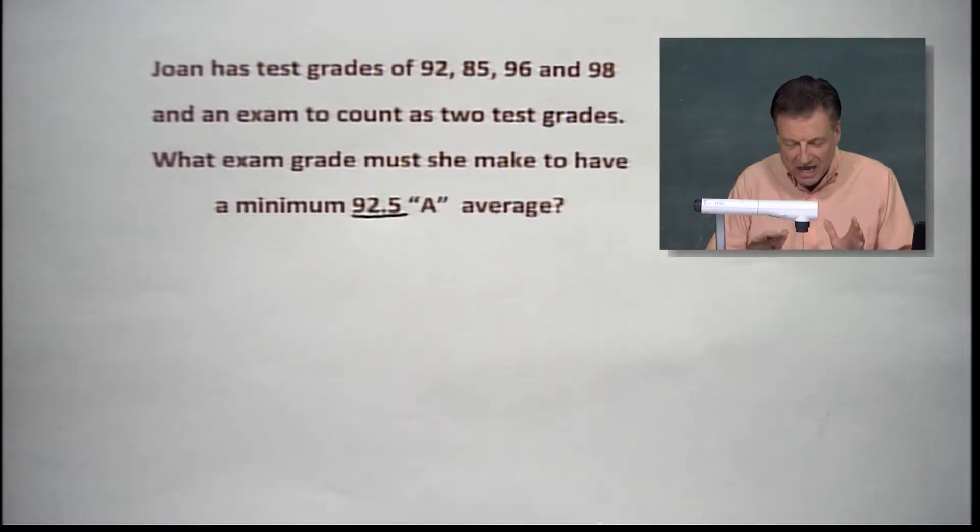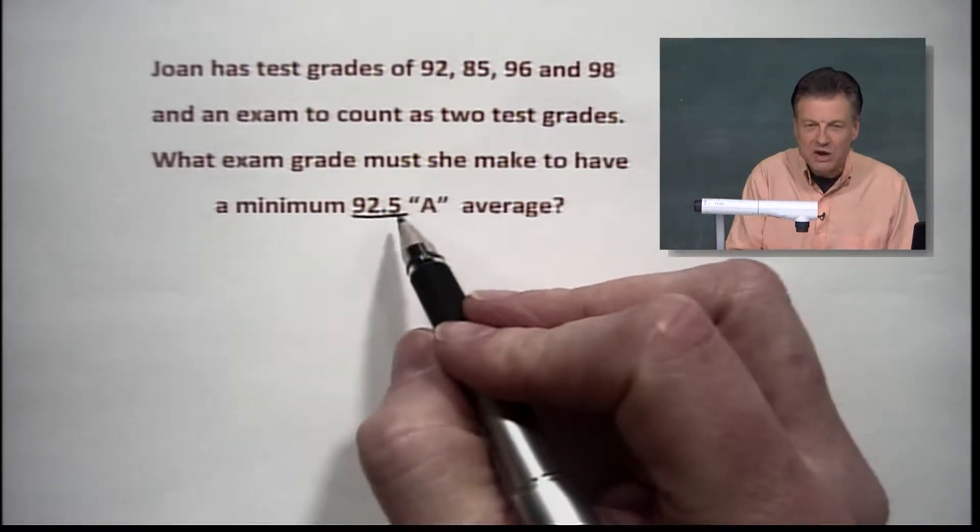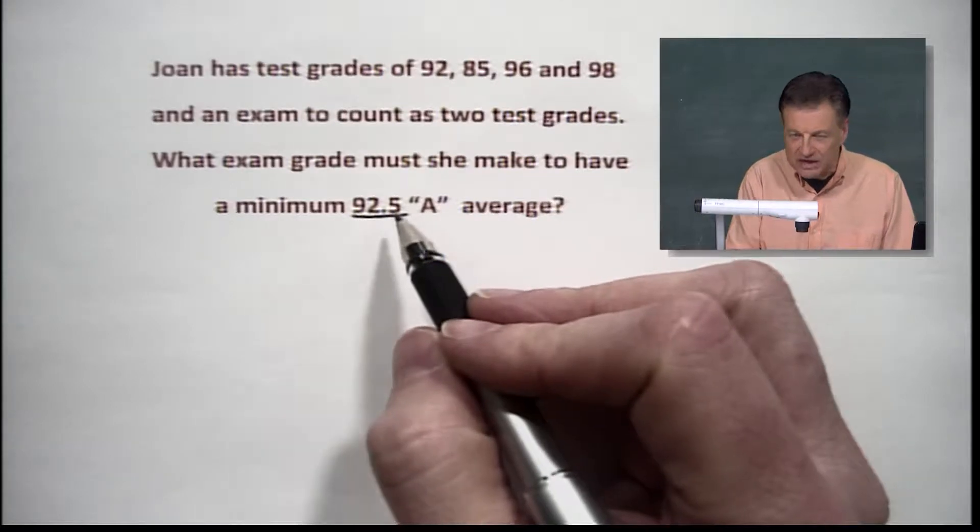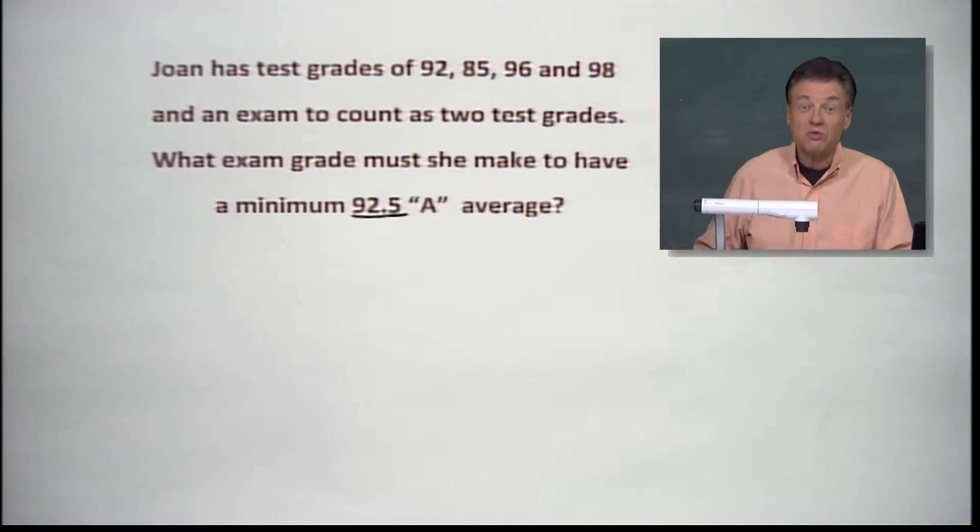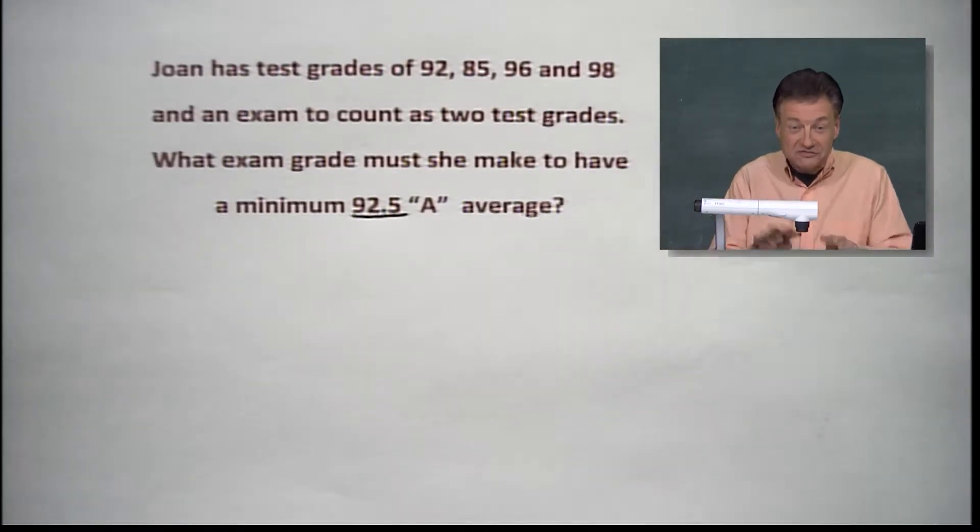So that's why that's minimum put in that way rather than say 93 or 92, but we're going to go for that 92.5. Now, trust me, I've had students that worked for that very, very fine line of A and B there.